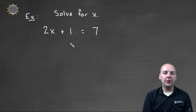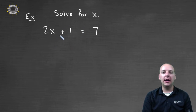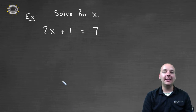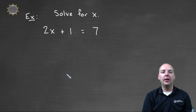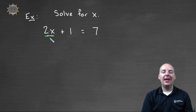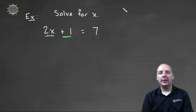Here's our first example. We're trying to solve for x: two times x plus one equals seven. This is a two-step equation and I see two things done to x: x is being multiplied by two, and on top of that we're adding one.